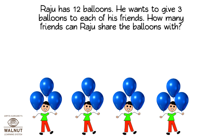There were twelve balloons. Each child was given three balloons. Four children got balloons. Twelve divided by three is four. We subtracted again and again to divide. So twelve divided by three is equal to four.